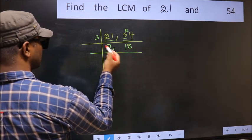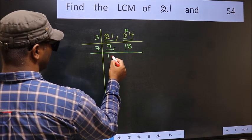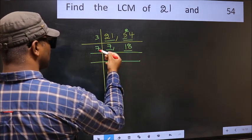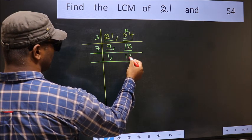Now here we have 7. 7 is a prime number. So 7, 1, 7. The other number 18 not divisible by 7. So you write it down as it is.